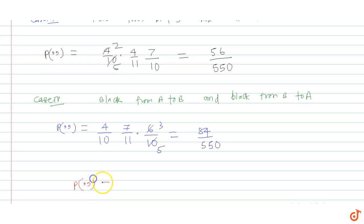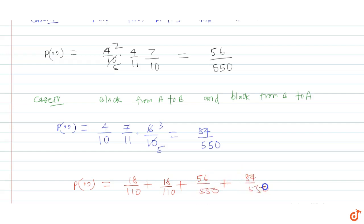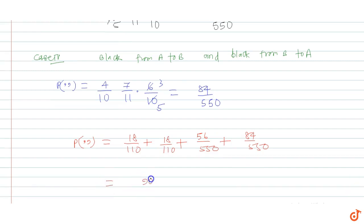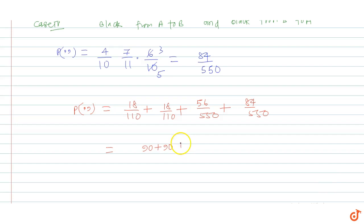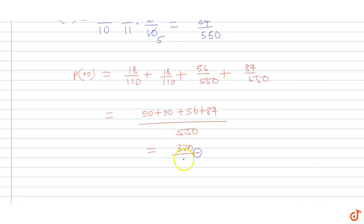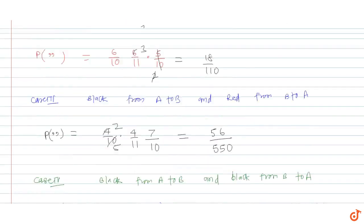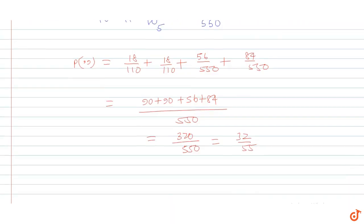The final probability is the addition of all 4 cases: 18/110 + 18/110 + 56/550 + 84/550. Finding the LCM and adding: 90 + 90 + 56 + 84 divided by 550, which gives 320 divided by 550. Cancelling, the final probability is 32 upon 55.